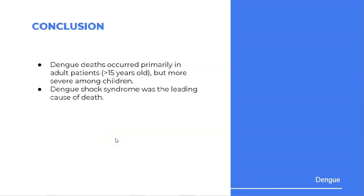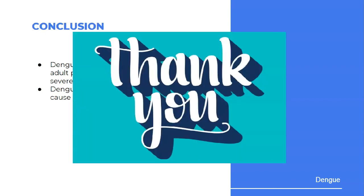In conclusion, dengue death occurs primarily in adult patients (more than 15 years old), but disease is more severe among children because they are more prone to hypovolemic shock and dengue shock syndrome. Dengue shock syndrome is the leading cause of death as it involves both severe bleeding and organ failure. Thank you.